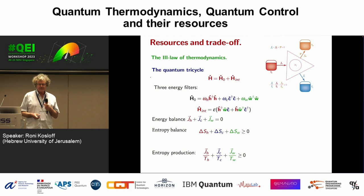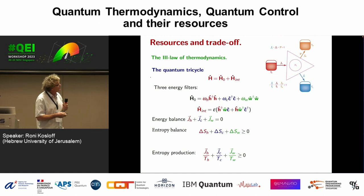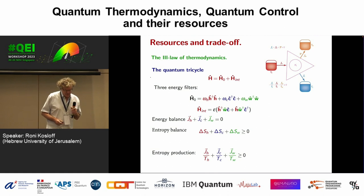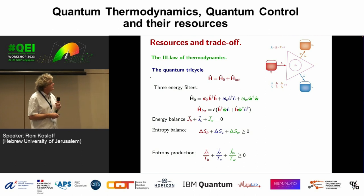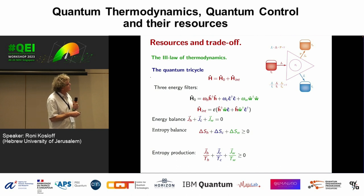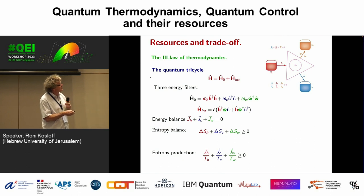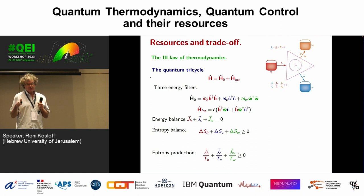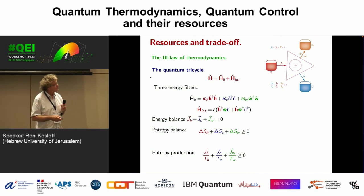Now we go to the third law of thermodynamics. What I have here is a universal refrigerator — like a transistor, it's a three-lead device. I'm cooling my cold bath, I have a work bath, and a hot bath. If I reverse the engine direction, it becomes a refrigerator. The first time it was realized was in Singapore — three ions in a trap — which I call the tricycle.